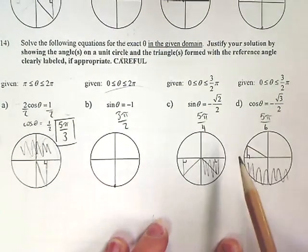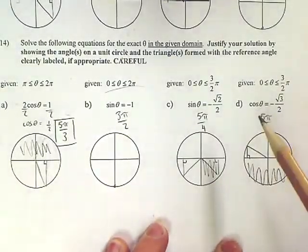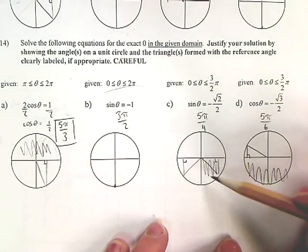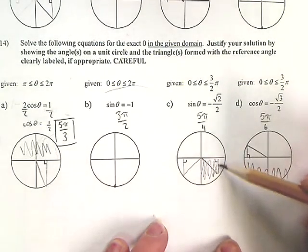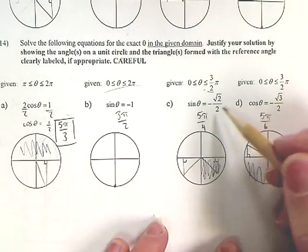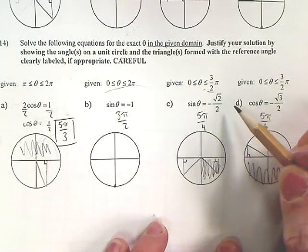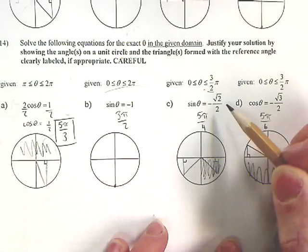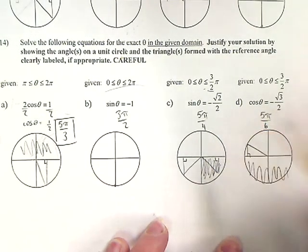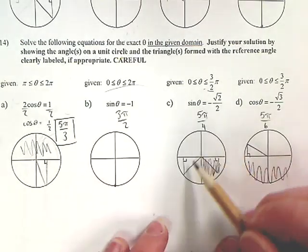Okay, so this one, we had to cross out this quadrant because it restricted it from right here. We had to find where sin θ equals negative √2/2, and we found it right here. That's 5π over 4.